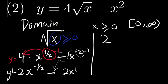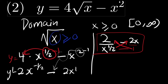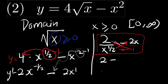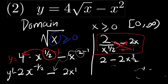The derived function can be written as 2 divided by x to the power of one half, minus 2x. In order to find the critical points, we make this into a single fraction. Multiplying through, we get: 1 times 2 in the numerator gives 2, minus x to the power of one half times 2x gives 2x to the power of 3 over 2. All divided by x to the power of one half. So the derived function is 2 minus 2x to the power of 3 over 2, all divided by x to the power of one half.